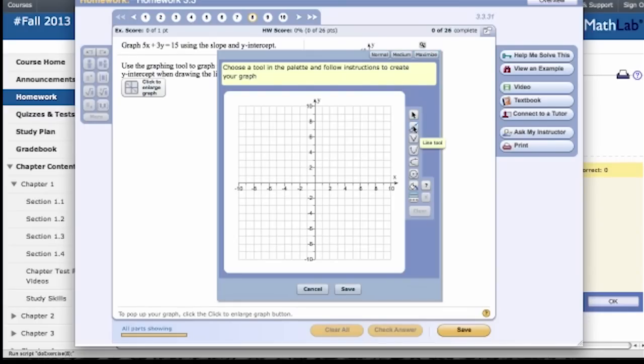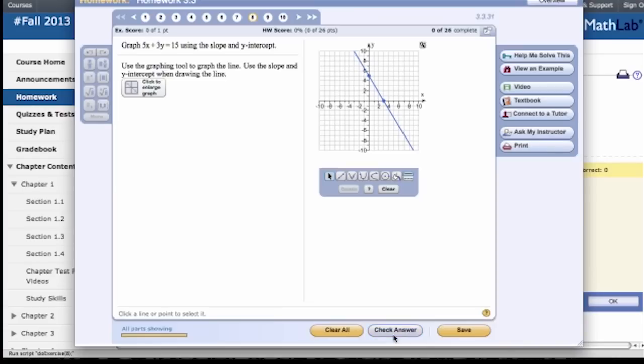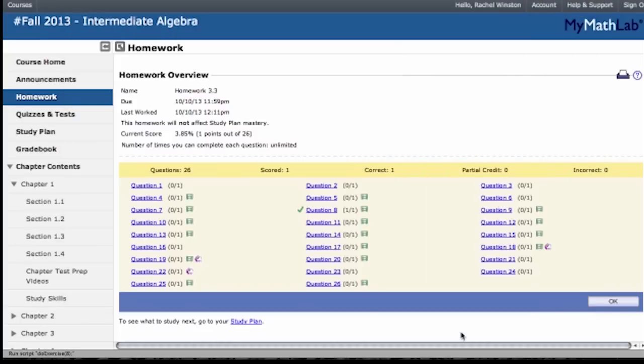But, we're going to leave it here, and we're going to click on the line tool again. There's the line, and we're going to put the first point on. So, when x is 0, y is 5. Click. When y is 0, x is 3. Click. And we're going to save it. So, you have to push save, and then you check your answer, and it says nice work. So, we got that question right. We're going to leave this, and we're going to try another assignment, so I can show you a different process.